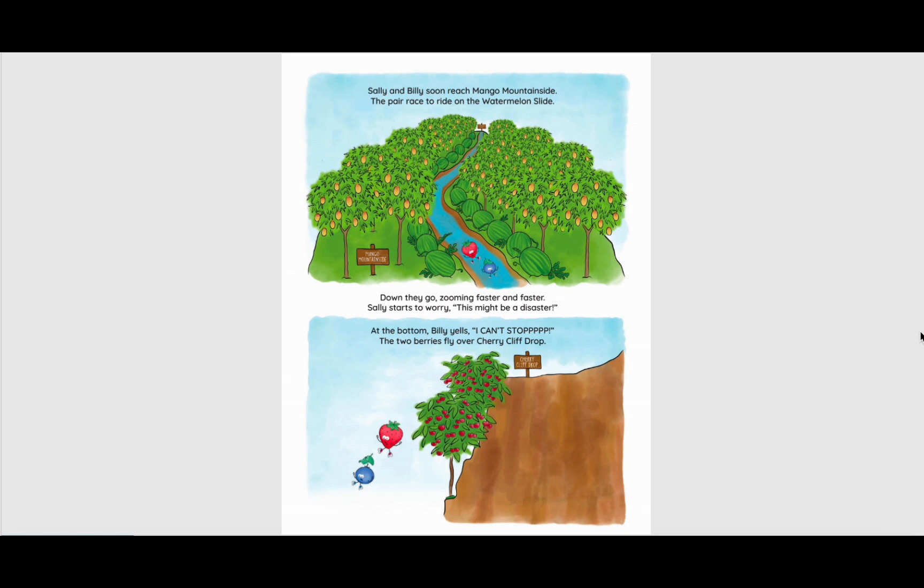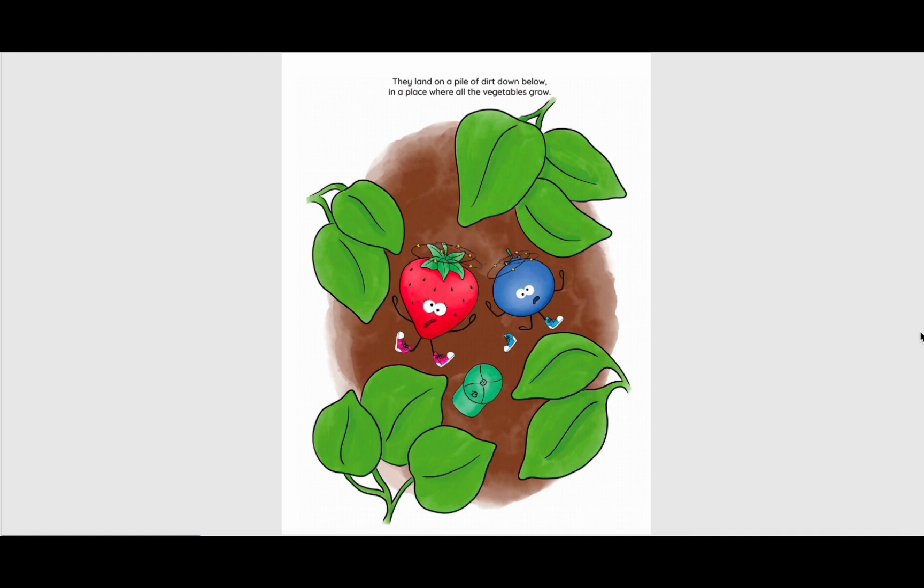At the bottom, Billy yells, I can't stop! The two berries fly over Cherry Cliff Drop. They land on a pile of dirt down below, in a place where all the vegetables grow.